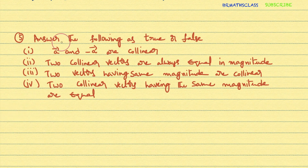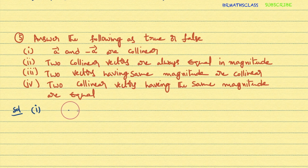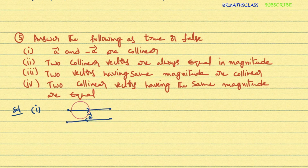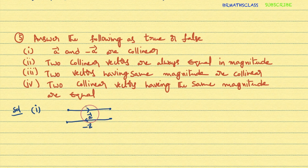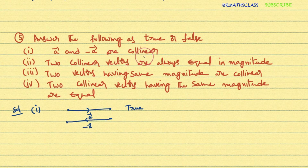Fifth question: Answer the following as true or false. First bit: a-bar and minus a-bar are collinear. Minus a-bar has the same magnitude but opposite direction. Collinear vectors are also known as parallel vectors — and these two vectors are parallel to each other. So a-bar and minus a-bar are collinear. First bit is TRUE.